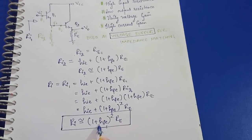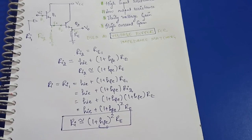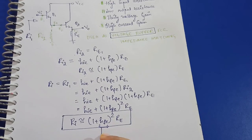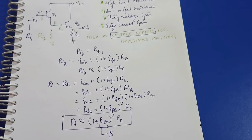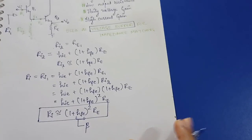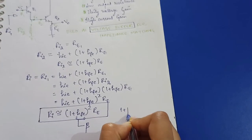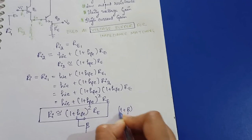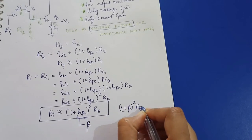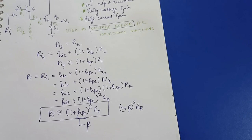h_fe in the pi model is nothing but beta of the transistor. So we can also write this formula as (1 + β)² × RE. Thus we can say that the input resistance is very large, in terms of megaohms.